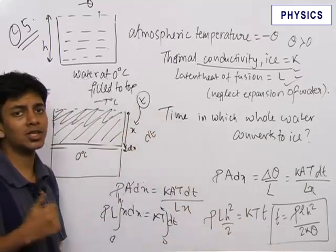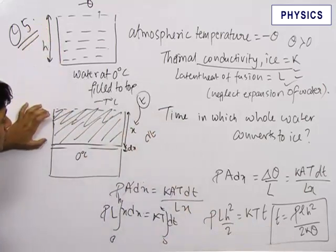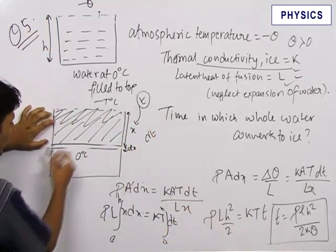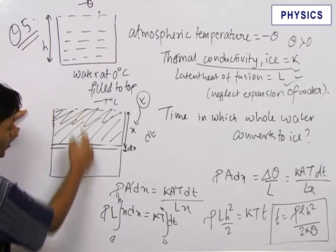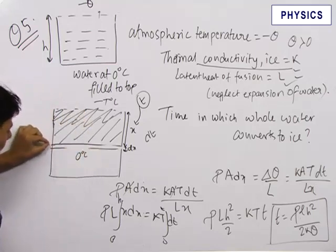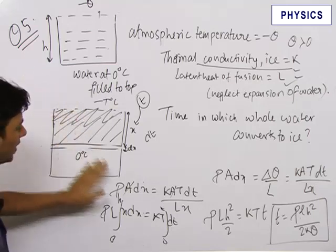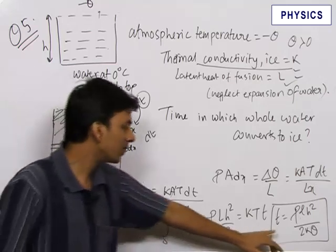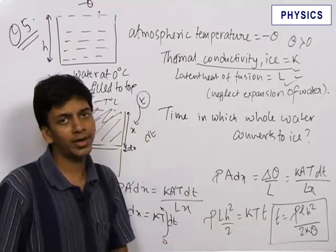In this question, the key insight is that you need to integrate to get the solution, because at any time t there will be a depth x of ice already formed, according to which we write the equation for heat current and the mass of water being converted into ice. By doing this simple integration, we get the final answer: T = rho·L·h² / (2·k·theta).